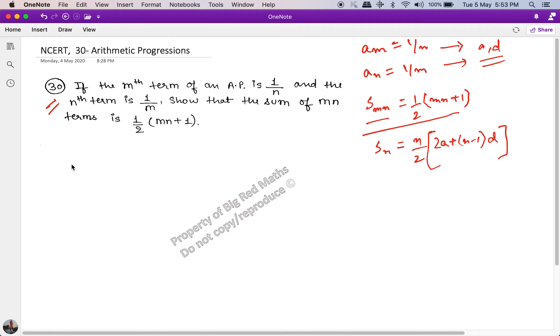So let's start solving this one. The question should be quite simple. Condition one says a of m, which is a plus (m minus 1) into d, is equal to 1 upon n.